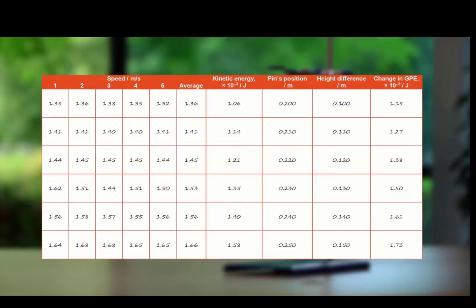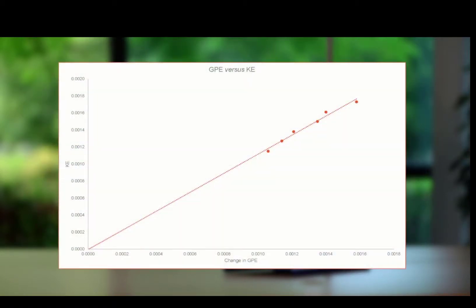The average speed is calculated for each set of results and from this the KE and GPE can be determined. A graph of change in GPE versus KE is then plotted once all data points have been recorded or calculated. The change in GPE is almost equal to the gain in KE.